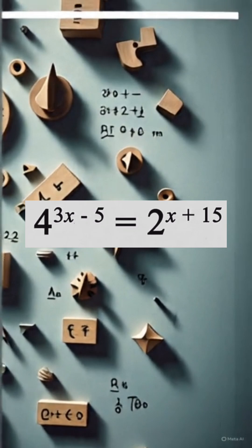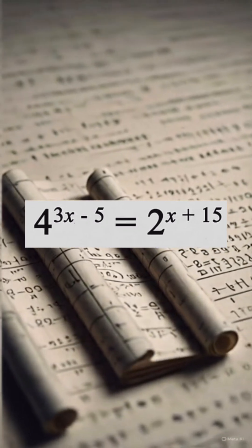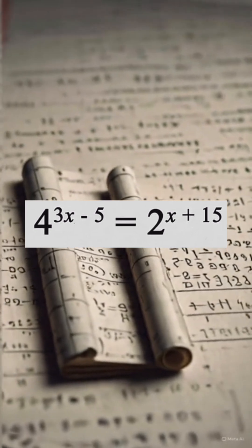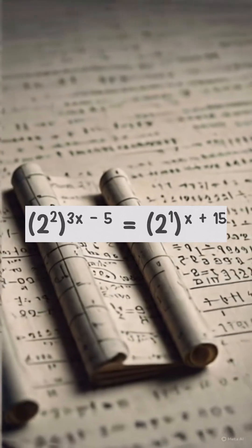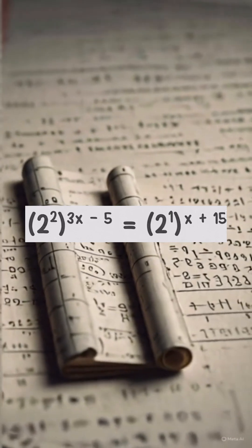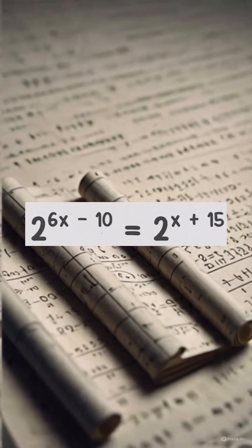Let's start by simplifying the left-hand side of the equation. We know that 4 equals 2 squared, so we can rewrite 4 to the power of 3x minus 5 as 2 squared to the power of 3x minus 5. Using the property of exponents, this simplifies to 2 to the power of 6x minus 10.